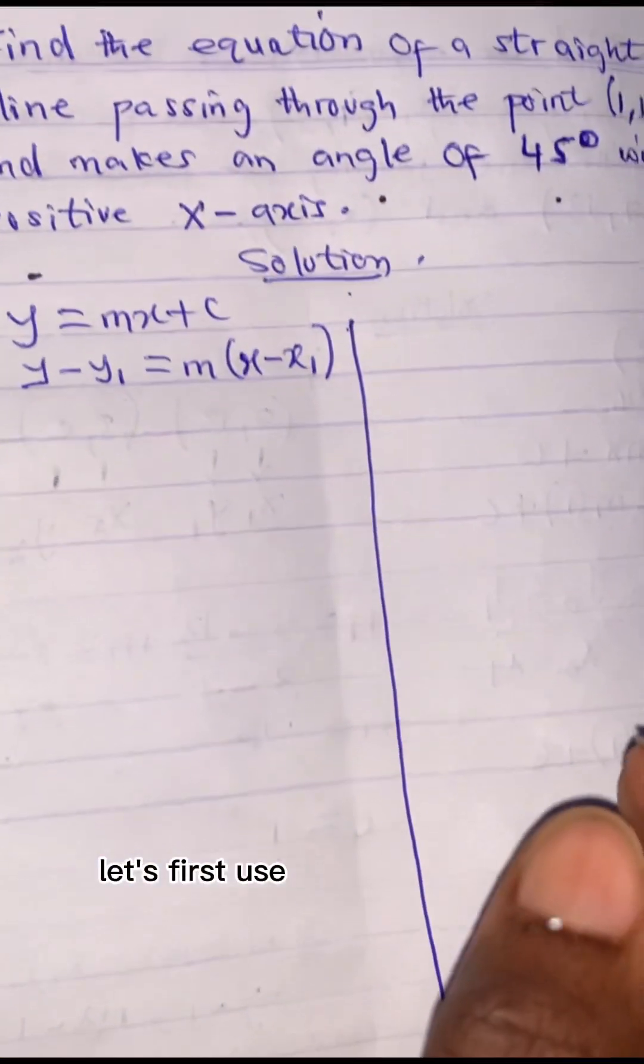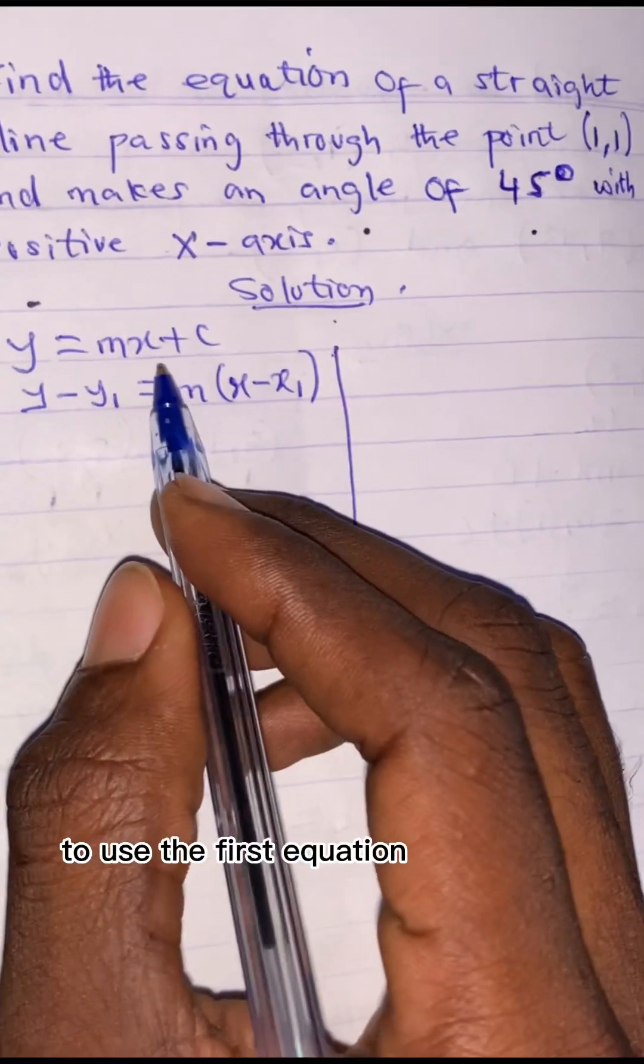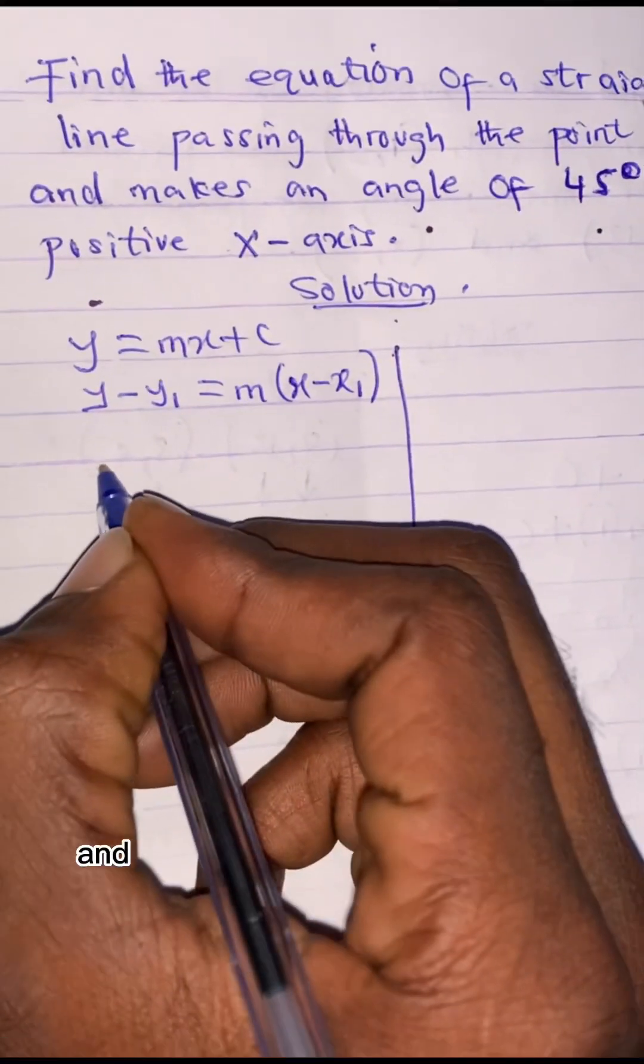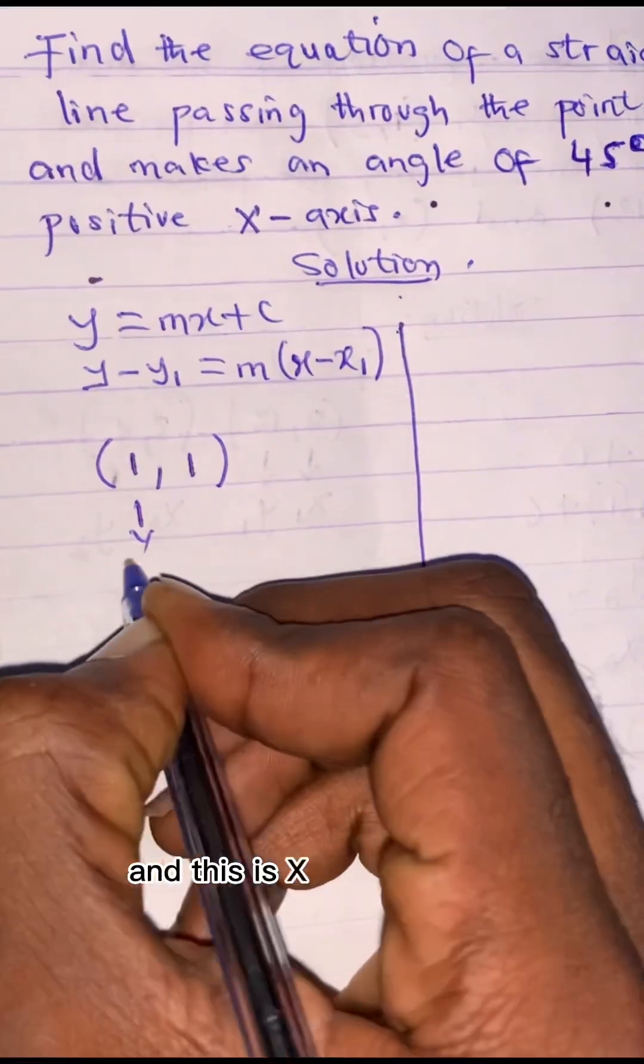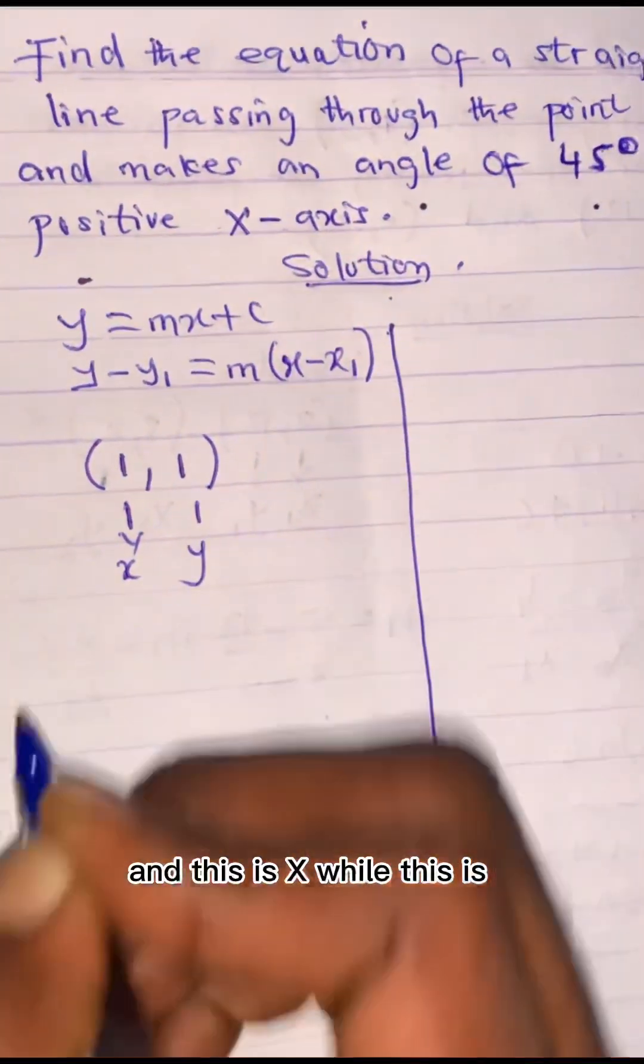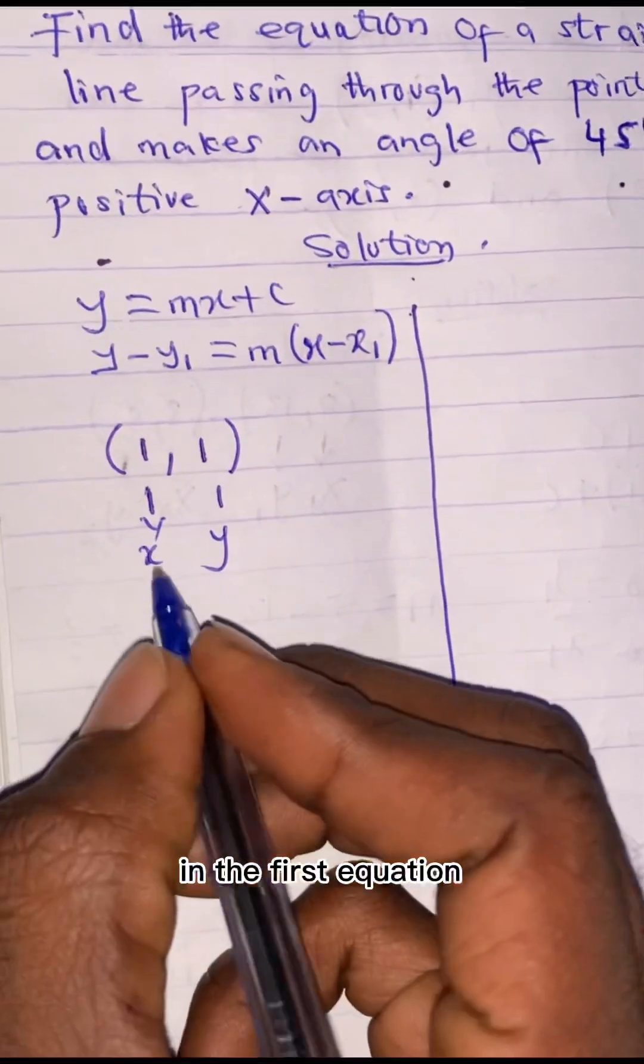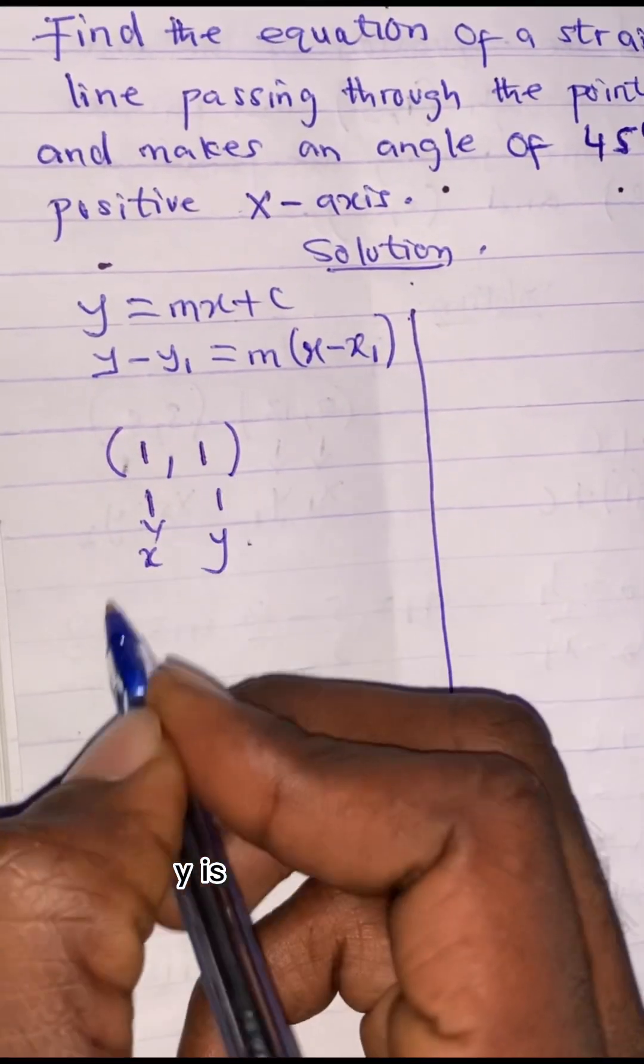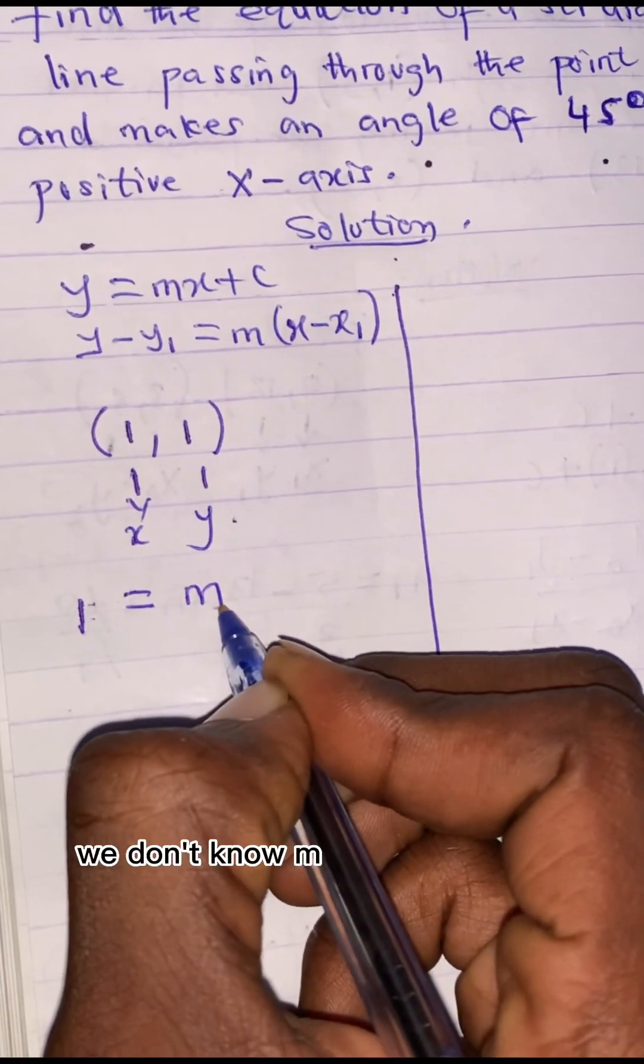Let's first use the first equation. To use the first equation, we just use the point, and the point is given as 1 and 1, and this is x, while this is y. So we can substitute this in the first equation. y is 1 equals to m, we don't know m